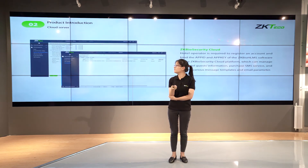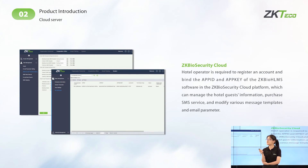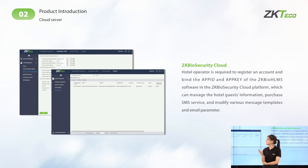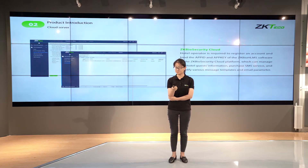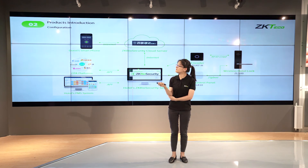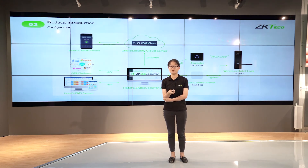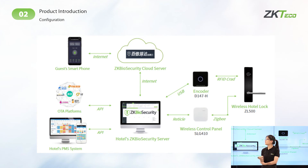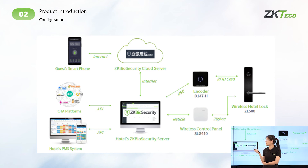Next is our cloud server. This is essentially the hardware center, as all the information and data will be exchanged and transferred through this platform. You can also purchase SMS service and set the message templates. The last part is the hardware solution configuration, which shows how each part interacts with each device, such as how the lock interacts with the software.